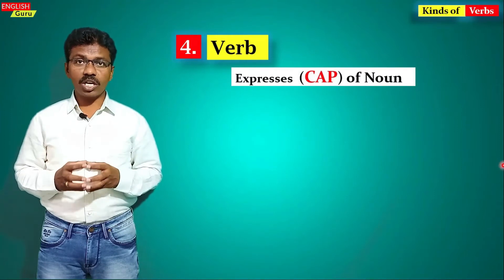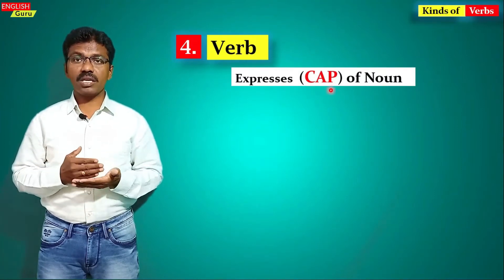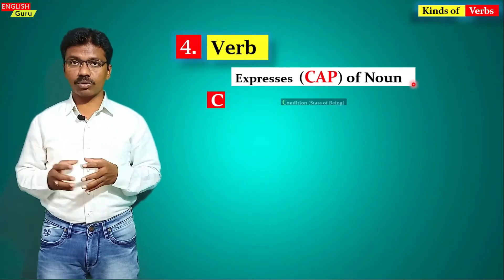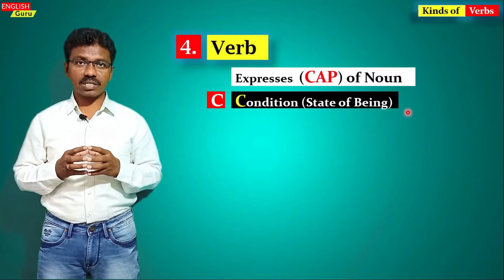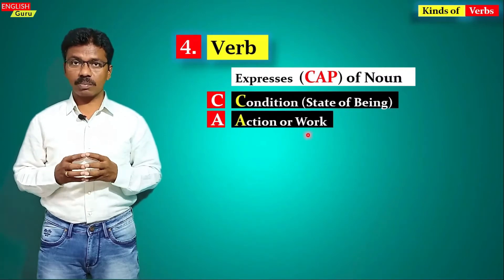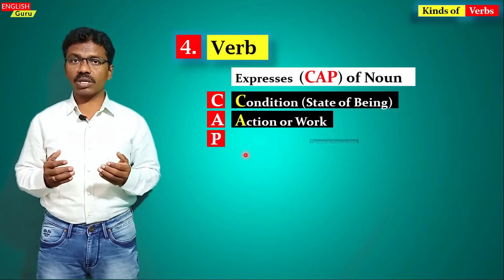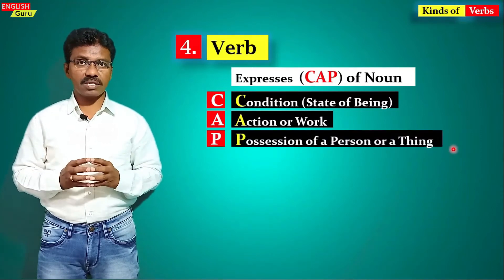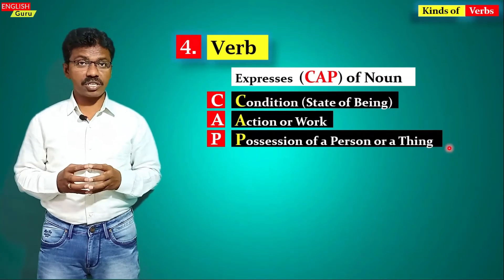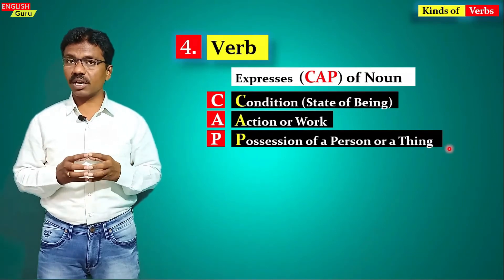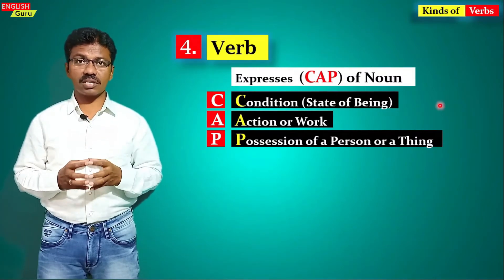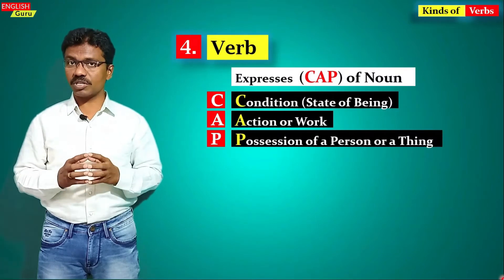So what is a verb? A verb expresses CAP of a noun or a pronoun. C stands for condition or state of being of a noun or a pronoun. A stands for action or work of a noun or a pronoun. P stands for possession of a person or a thing — possession is nothing but ownership. So in English language, a verb talks about three things: condition, action, and possession of a noun or a pronoun.